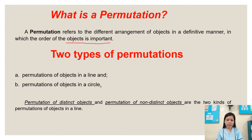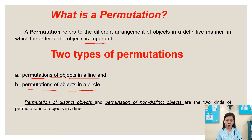There are two types of permutations: a permutation of objects in a line and a permutation of objects in a circle. Permutation of distinct objects and permutation of non-distinct objects are the two kinds of permutations of objects in a line.